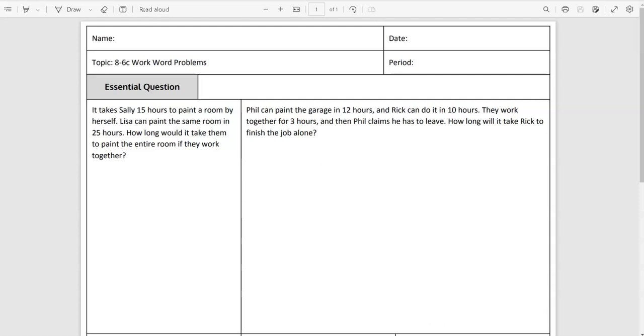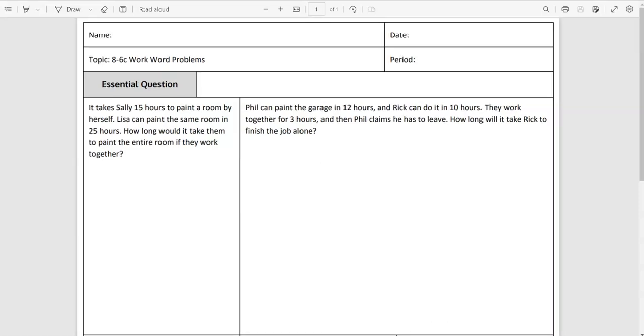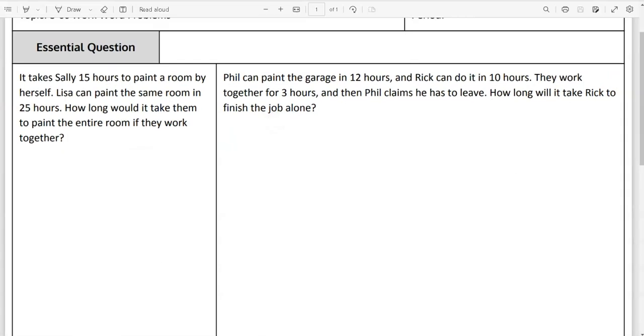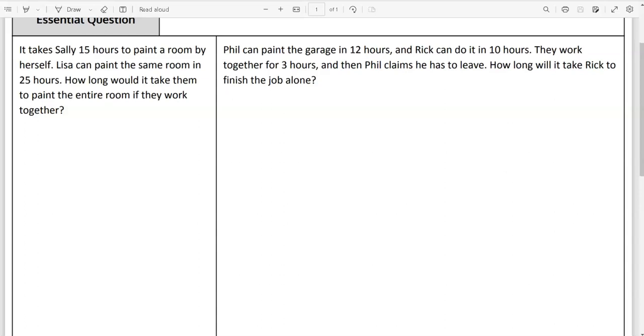So rational expressions, they are fractions, they are ratios, they are rates. That's how we're going to apply them to these kinds of word problems. We have one of each different kind that you could see. Your worksheet is going to kind of match up with those different examples. If Sally takes 15 hours to paint a room by herself, and Lisa can paint the same room in 25 hours, how long would it take them to paint the entire room if they worked together?